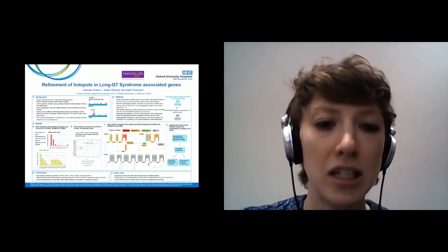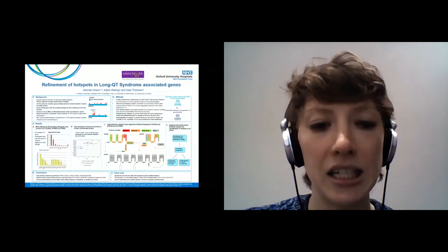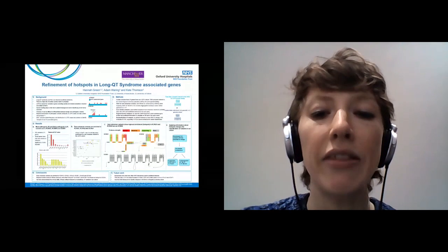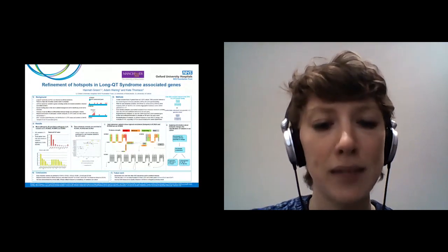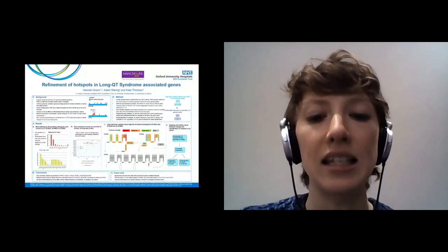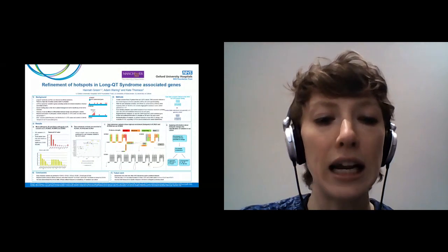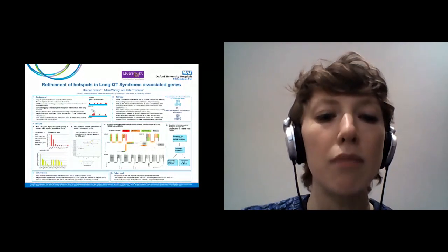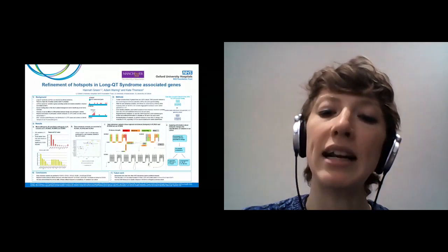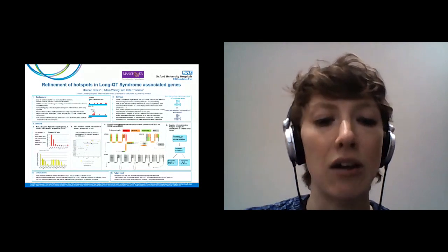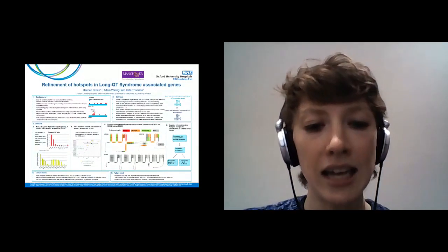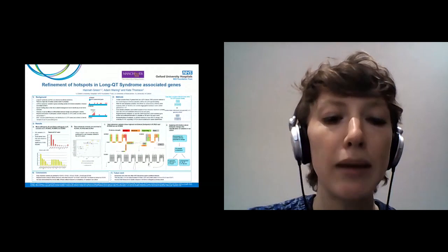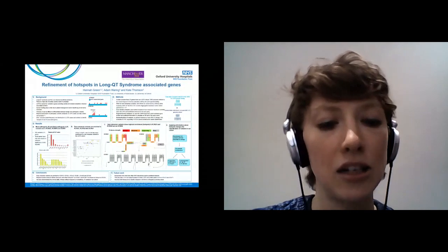There are two main take-home messages. First, the transmembrane regions of KCNQ1 and KCNH2 cannot be considered a single hotspot as previously described — there are actually several sub-hotspots within the general transmembrane region. Second, we find no hotspots in the SCN5A gene in our long QT syndrome cohort. Regarding variant reclassification, most classifications stayed the same, but we reclassified 15 variants — six being upgraded and nine downgraded.